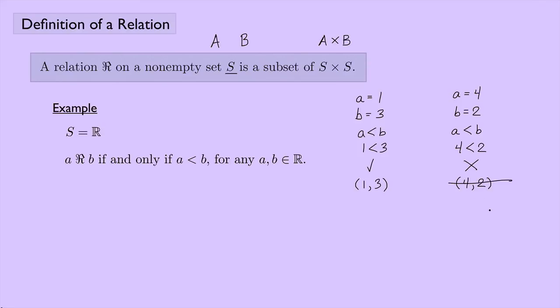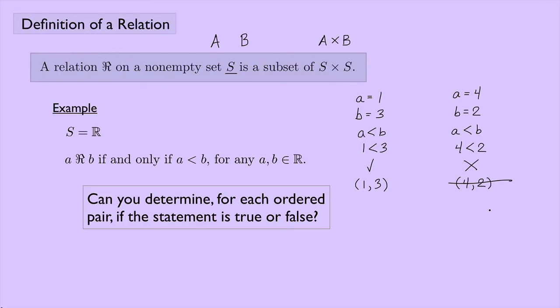So a good question to ask is: can you determine for each ordered pair if the statement is true or false? If you look at any ordered pair that is in the set S cross S, and you're able to answer if it's true or false, then that's a relation you have determined. So for this example here, I can pick any two real numbers, and whatever two real numbers I pick, I can ask definitively if a is less than b and get an answer that is either true or false. So this is indeed a relation.